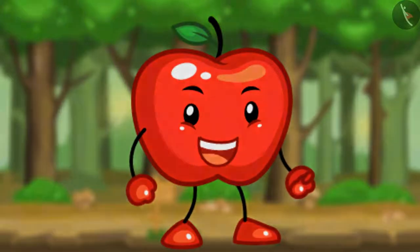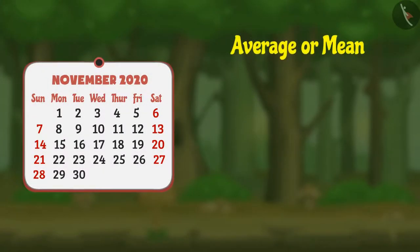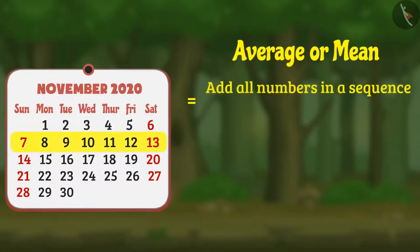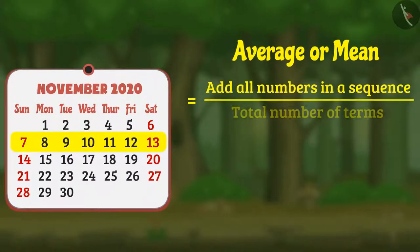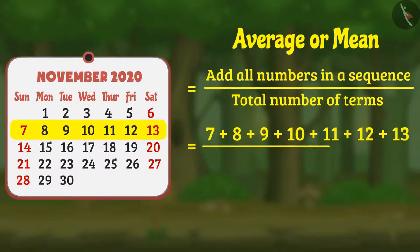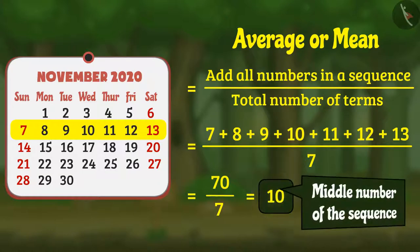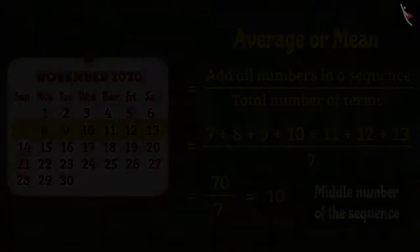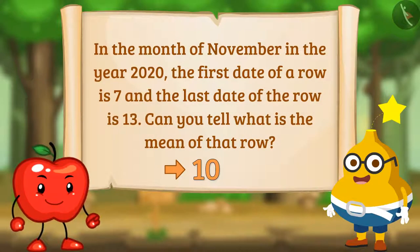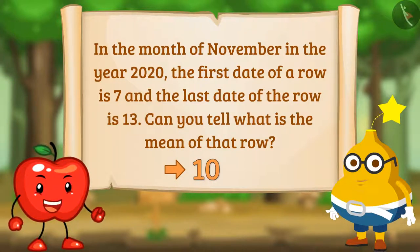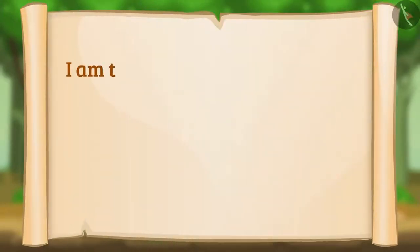After hearing this, Appy says: 'Now let me check it. To find the average or mean, we need to add all numbers in a sequence and divide it by the total number of terms. The answer helps us arrive at the mean, and yes, it is the middle number of the sequence. Very good Fruity, you have given the right answer!'